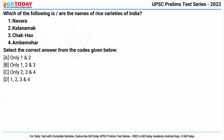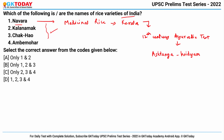Question number one: which of the following are names of rice varieties of India? The first option is Navara — a medicinal rice variety that originated in the state of Kerala. This variety finds mention in the 12th century Ayurvedic text named Ashtanga Hridayam, one of the three major literary works of Ayurveda, composed by eminent scholar Vagbhata. So this option is correct.